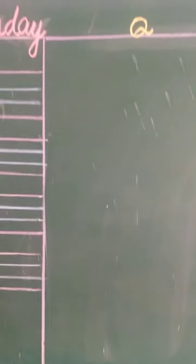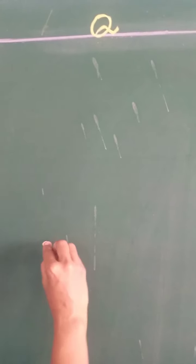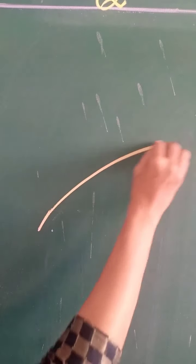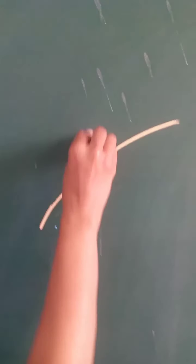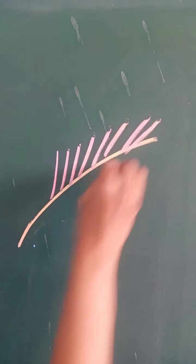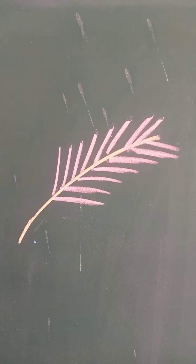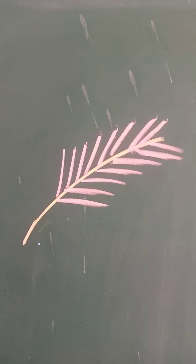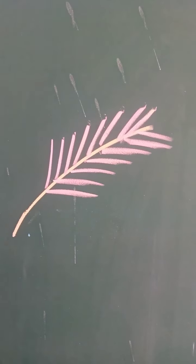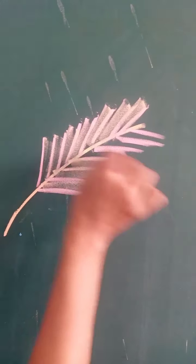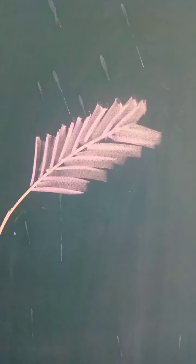You know, Q for quill. First of all, draw a curved line like this. And now draw slanting lines. This is Q for quill. Now you can do the curving in the quill. You can do light shading like this. This is Q for quill.